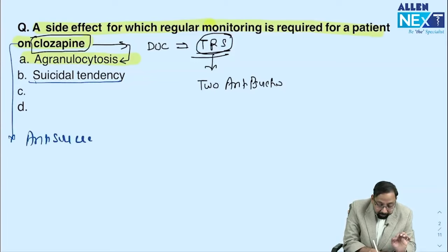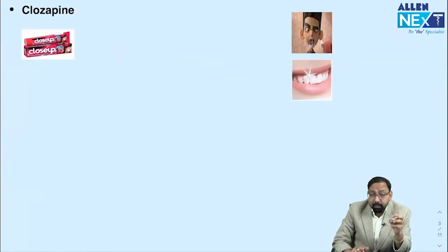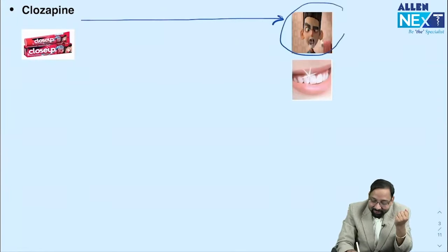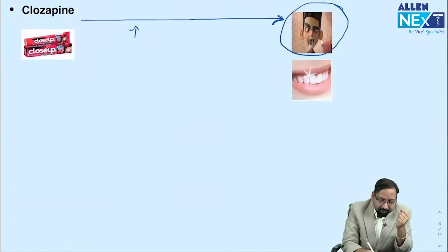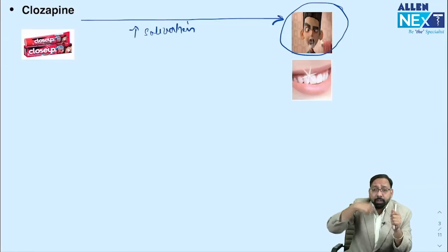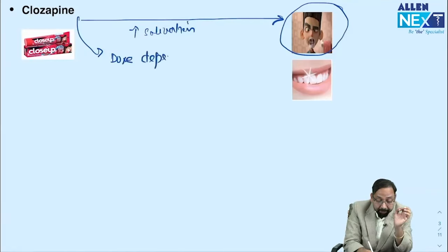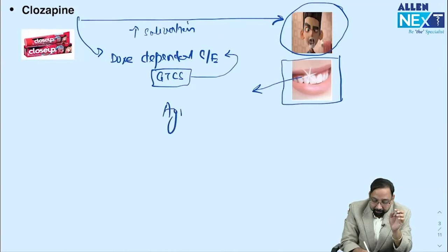Remember clozapine as 'Close-Up' toothpaste — whenever you brush with Close-Up, there is salivation. So increased salivation is a very common side effect of clozapine. If you brush very rapidly, anyone watching would say you're having seizures — that's the mnemonic for the next side effect: dose-dependent generalized tonic-clonic seizures.